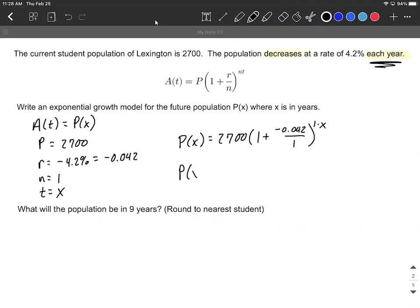We can simplify this down, reduce a little bit, make it a little bit cleaner. So 2,700 times 0.958 raised to the X power.